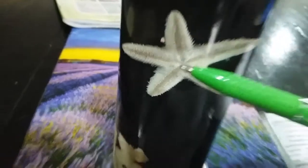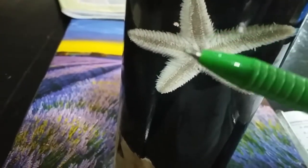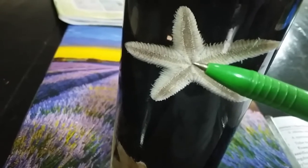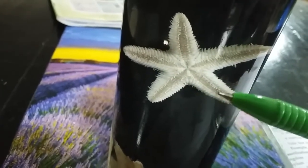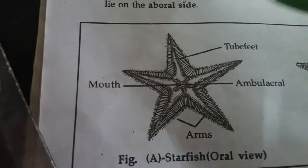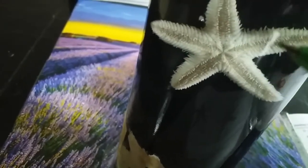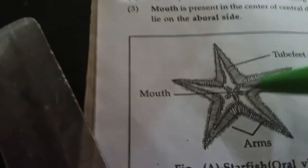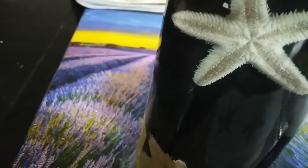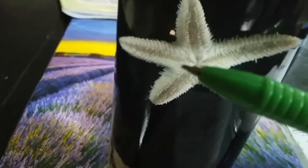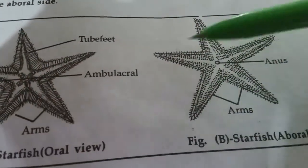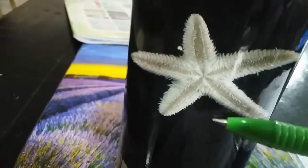You can also see the mouth of this starfish. This is its central disc. At its central disc, this is the mouth of the starfish. These are the five radiating arms and tube feet inside the arm. This is the mouth of the starfish. These are the arms of the starfish.